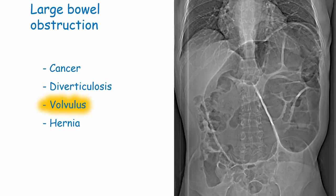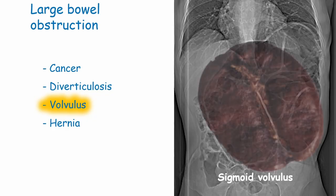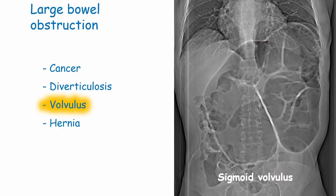In a sigmoid volvulus, the sigmoid colon twists on itself and its surrounding mesentery. The x-ray shows the classic coffee bean sign, with the loop of bowel typically pointing towards the diaphragm. Note that the proximal bowel is also dilated, as pressure builds up behind the obstruction.